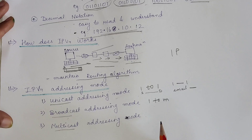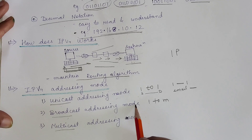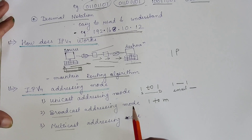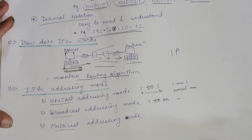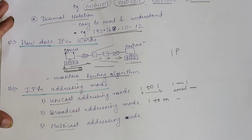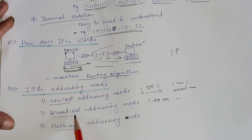In broadcast addressing mode, it is one-to-many communication. Data is sent to all hosts connected in a particular network. The destination address field contains all the addresses to which the data needs to be sent. For example, a teacher making an announcement to all students in a classroom at the same time is broadcasting. Television is also an example of broadcasting.